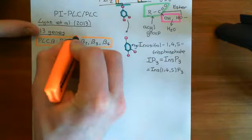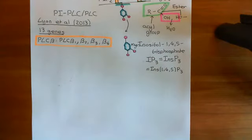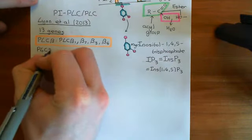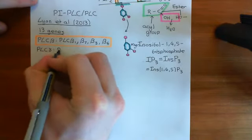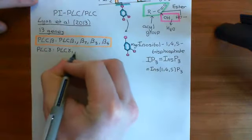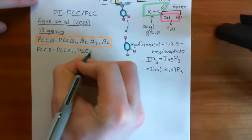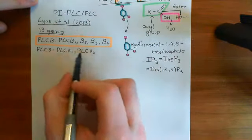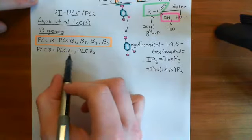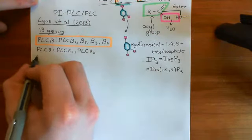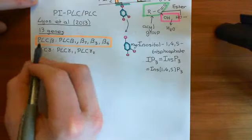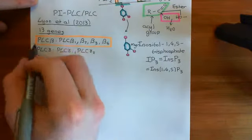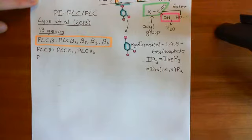For a complete picture, the other families of phospholipase C enzymes are also presented. The next family is the phospholipase C gamma family, which contains only two members: phospholipase C gamma 1 and phospholipase C gamma 2. These are quite different from the phospholipase C betas — they are not activated by G-alpha-Q/11 subunits of heterotrimeric G proteins. In fact, none of the other forms of phospholipase C are activated by G-alpha-Q/11 subunits; that is something special to the phospholipase C beta family.